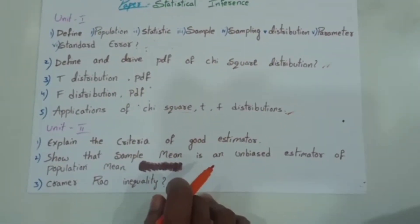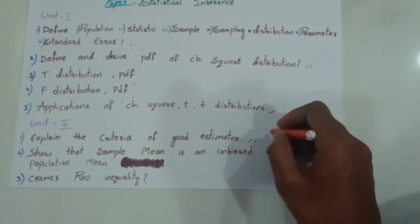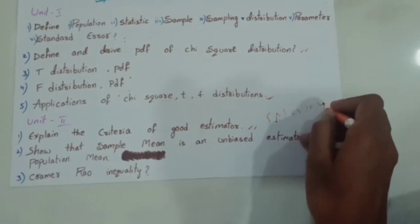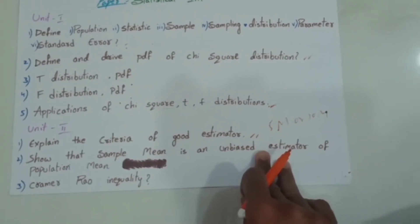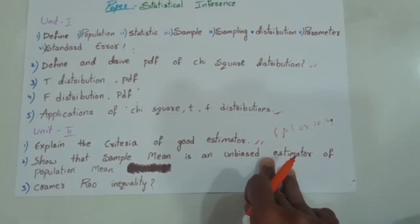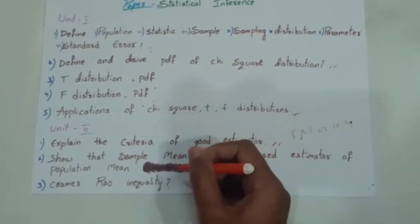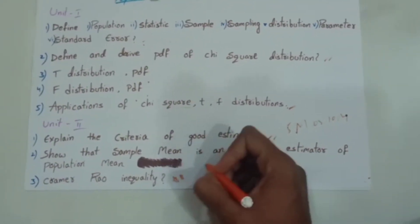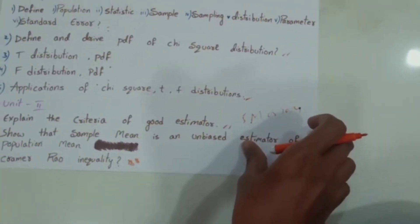Next, explain the criteria of a good estimator — this is a very important question, either 5 marks or 10 marks. Next, show that sample mean is an unbiased estimator of population mean. And next, the Cramer-Rao inequality — this is a very very important question, worth 10 marks.